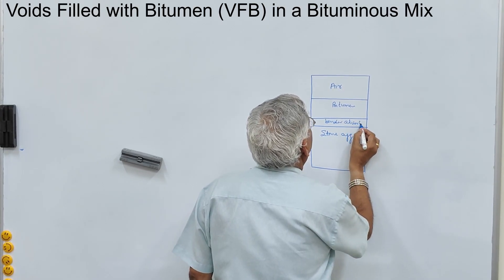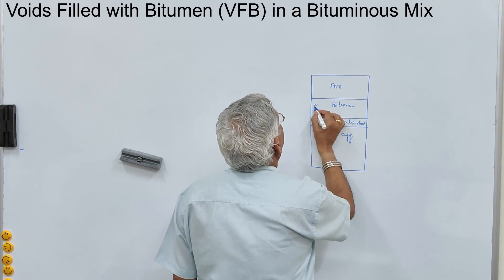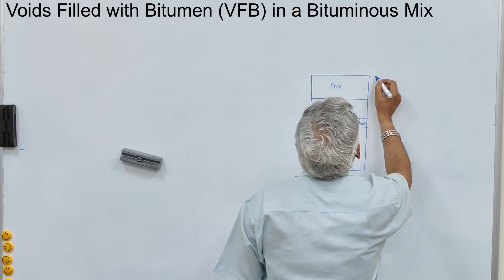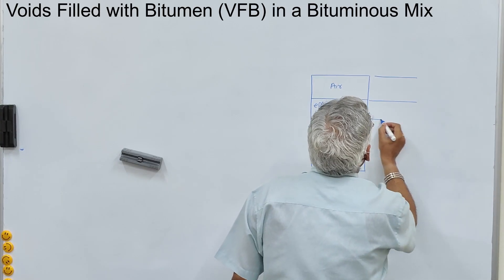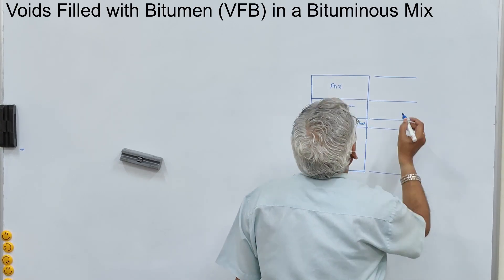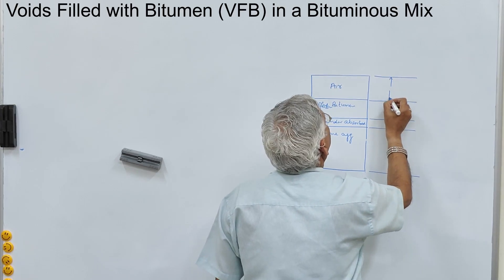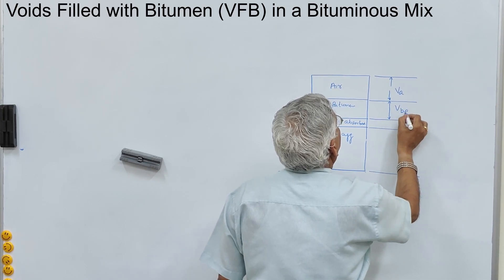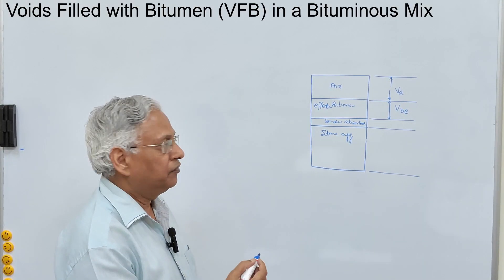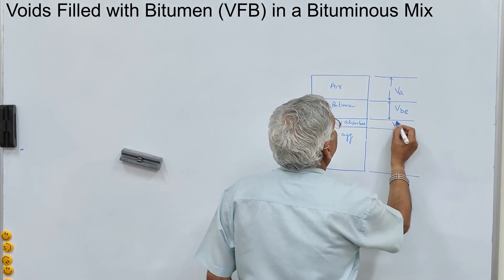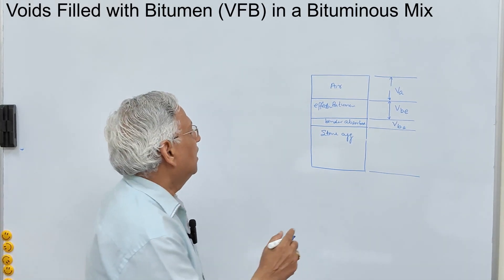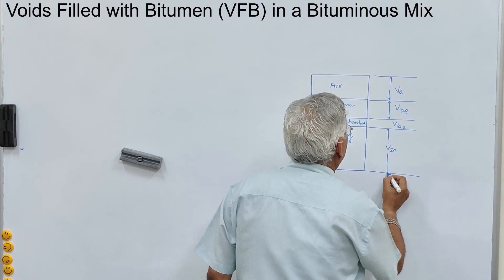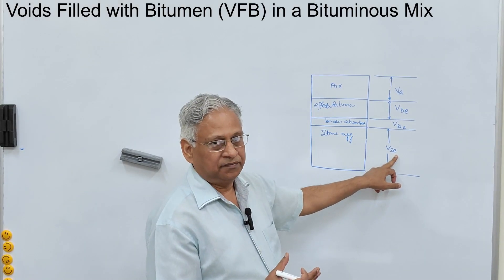Out of total binder content, some binder is absorbed by the aggregate, and the remaining binder in the mixture is what we call the effective bitumen. If you see the volume, this is what we call the air voids VA, this is the effective binder content or volume of effective bitumen VBE, this is the volume of absorbed binder VBA, and this is VSE or the effective volume of solids, that is the aggregate.